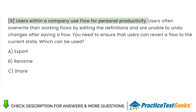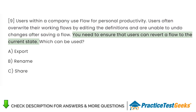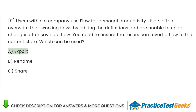Users within a company use Flow for personal productivity. Users often overwrite their working flows by editing the definitions and are unable to undo changes after saving a flow. You need to ensure that users can revert a flow to the current state. Which can be used? A. Export. B. Rename. C. Share.